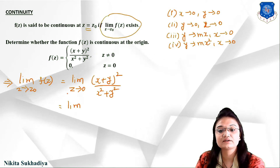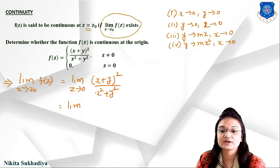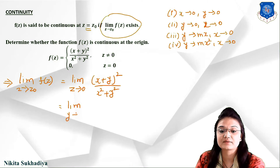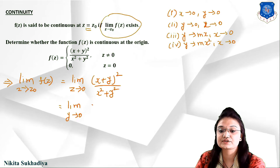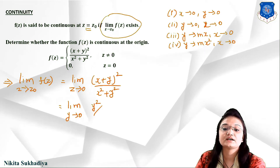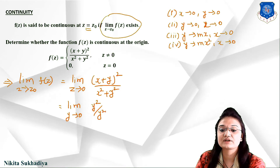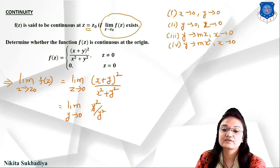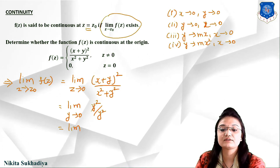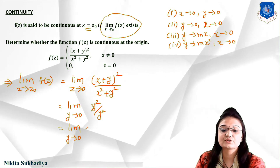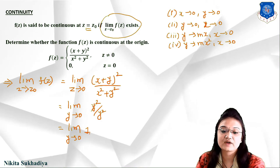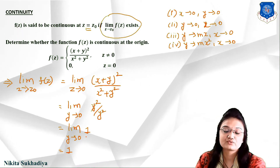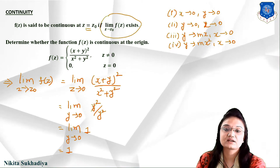If we get the same answer from all paths, we can say the limit exists. But if any answer depends on the value of m or theta, then we say the limit does not exist. For path 1, take x→0 first then y→0. Put x = 0: numerator becomes y², denominator becomes y², they cancel out, giving limit y→0 of 1 = 1. Our first answer is 1.